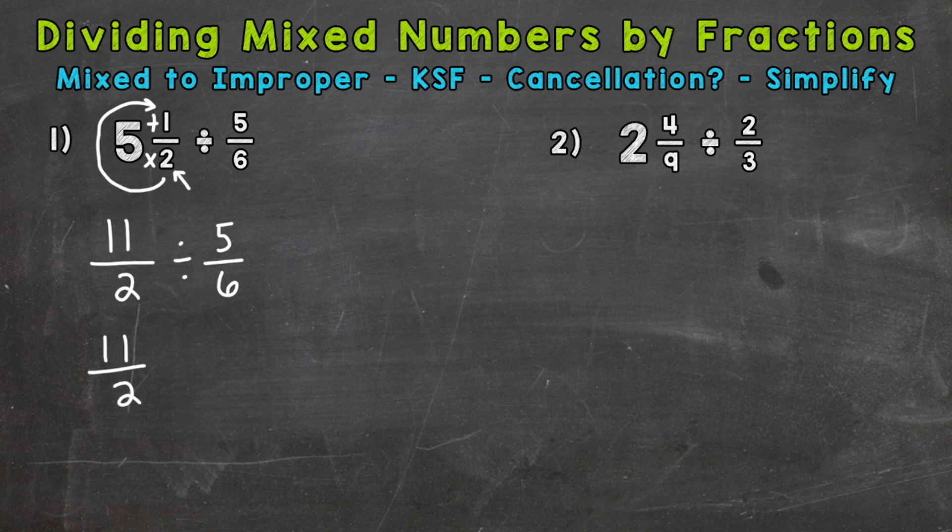Keep it as is. Then we switch the division to multiplication. So multiplication is the opposite of division. And since we switch that to multiplication, we need to flip the second fraction here. So the 6 is going to be the numerator, and the 5 is going to be the denominator.